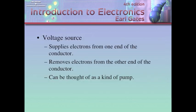Voltage source supplies electrons from one end of the conductor. It removes electrons from the other end of the conductor. So a voltage source must have the ability to supply and remove. You have to have both. You could think of it as a kind of pump. It's like an electric pump. A pump creates pressure. A voltage source creates pressure, electrical pressure, not water pressure like a pump. Make sense?